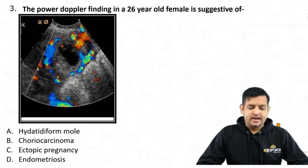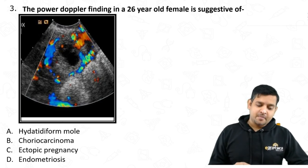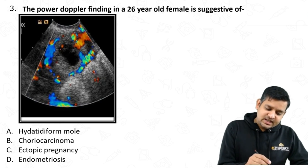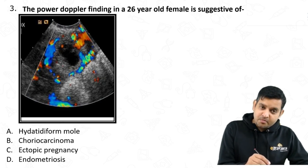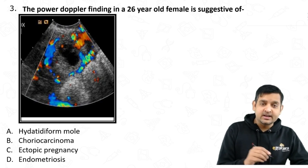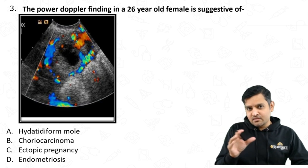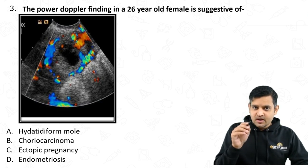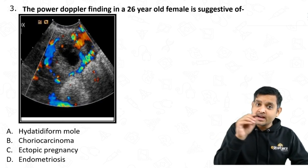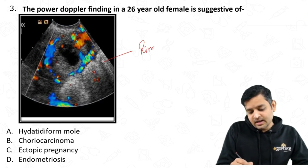A Power Doppler finding in a 26-year-old female — first, let's look at what we see. There is a cystic lesion with some solid component in the periphery and a lot of vascularity in the periphery, like a ring. If you see a predominantly cystic lesion with vascularity in the periphery, this is classically labeled as the ring of fire appearance.